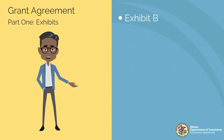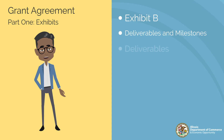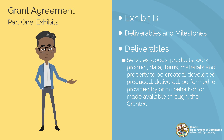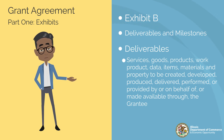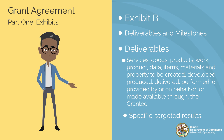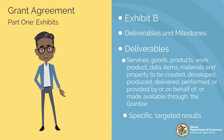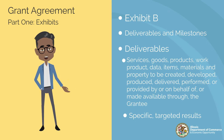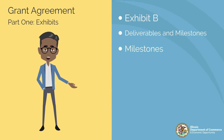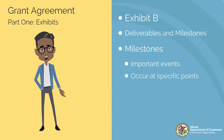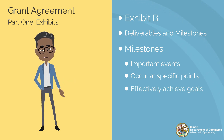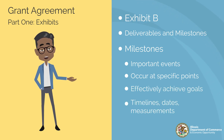Exhibit B covers deliverables and milestones. Deliverables include services, goods, products, and other items to be created, developed, or performed by the grantee. Deliverables are specific and targeted results expected from the activities outlined in Exhibit A, serving as a checklist of what is to be accomplished throughout the term of the agreement and measurable to determine if the grantee has satisfied all obligations. Milestones are important events that must occur at specific points throughout the term to effectively achieve goals. Within this section, you may see timelines, dates, or other measurements where appropriate.